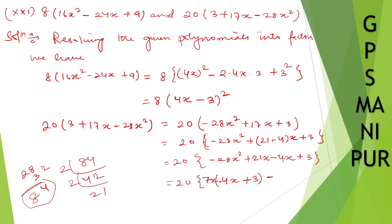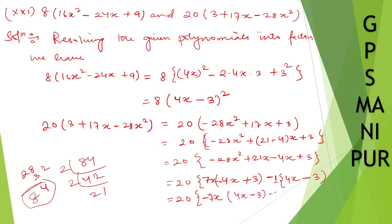From the last two terms I take minus 1 common, giving minus 1 times 4x minus 3. So the factored form of minus 28x² plus 17x plus 3 is minus 7x minus 1 times 4x minus 3. Therefore 20 into 3 plus 17x minus 28x² equals 20 times minus 7x minus 1 times 4x minus 3.